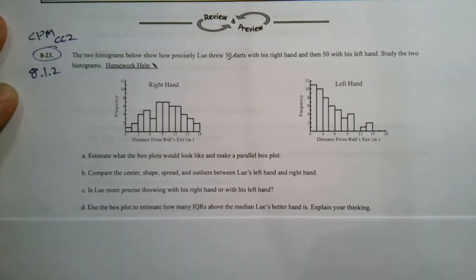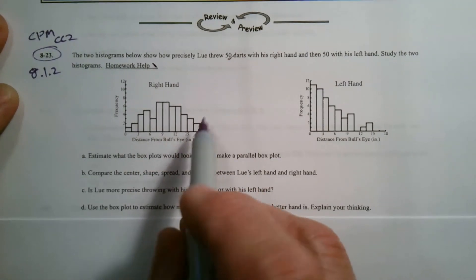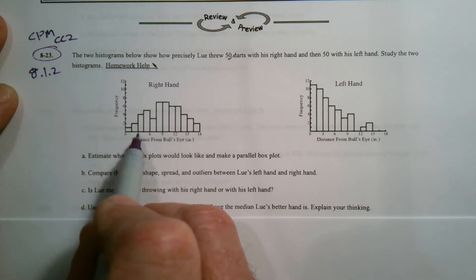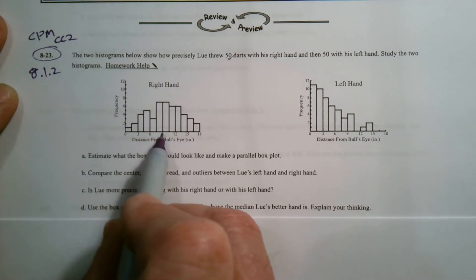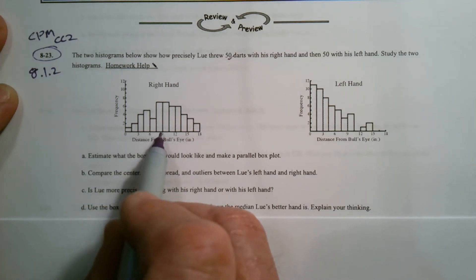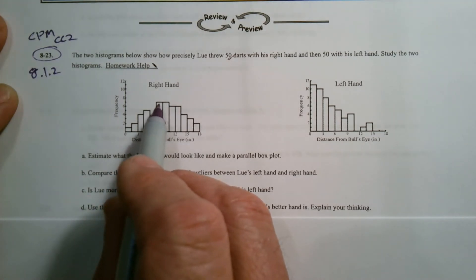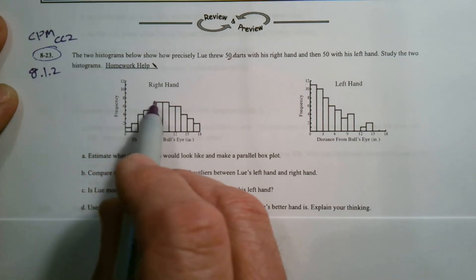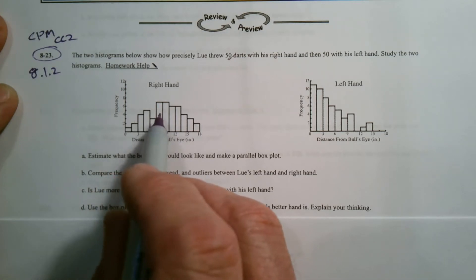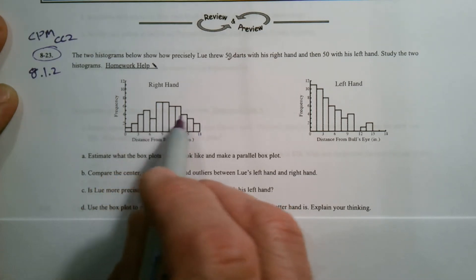Study the two histograms. We know that the histogram here represents 50 throws — 50 times he threw a dart. If you look at our bins here, our bin here is from 0 to 1.5, then 1.5 to 3, then 3 to 4.5. It's 1.5 inches each time, and that would be inches from the bullseye. If I look at this bin, we're at seven — so seven times he threw a dart that was within 7.5 to 9 inches from the bullseye. That's what each bin represents and the frequency of those bins.